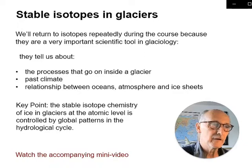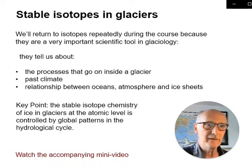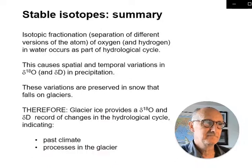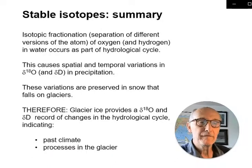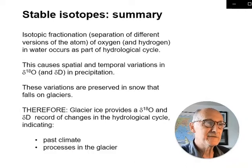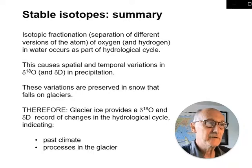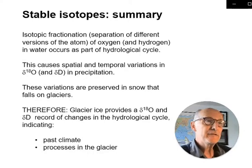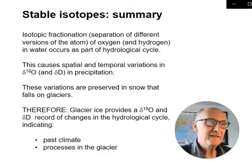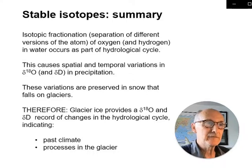If you watch the accompanying mini video on isotopes, it'll give you a bit more detail. Different scales interact when we're looking at things to do with glaciers and the environment. This slide summarizes the key points to carry forward: the separation of different versions of atoms of oxygen and hydrogen — what we call isotopic fractionation — occurs naturally in water, water vapour, and the atmosphere as part of the hydrological cycle.